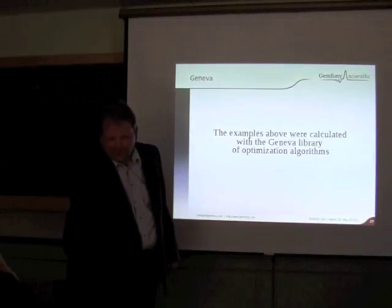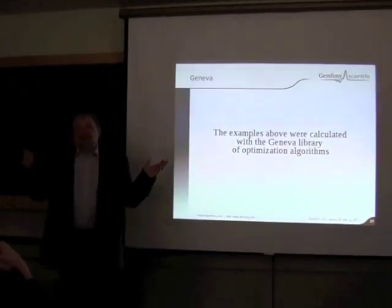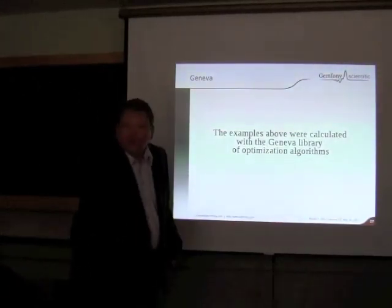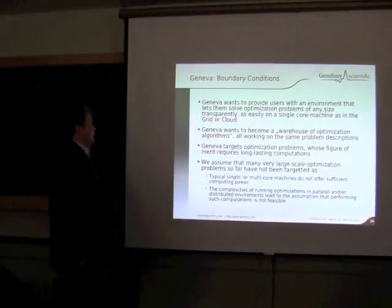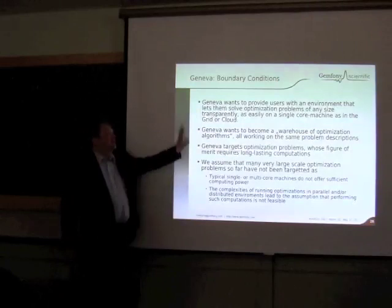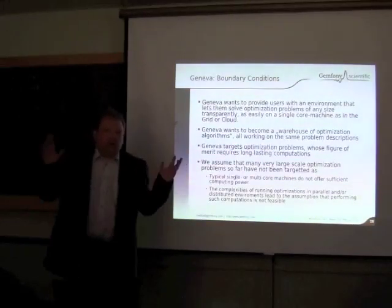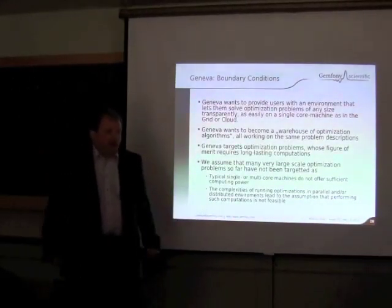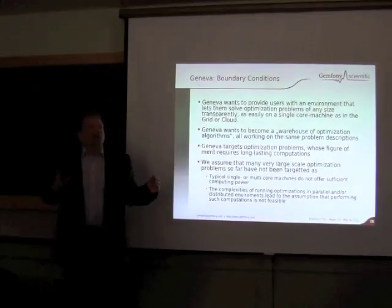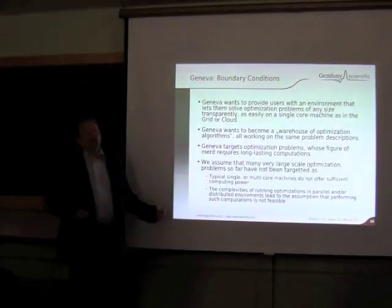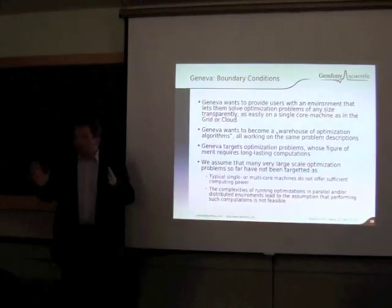These examples were calculated with the Geneva Library — though that's not the usual use case for it, because the evaluation of each candidate solution doesn't take long; it's a good way to visualize what happens. So, let's talk about the Geneva Library itself. It wants to provide users with an environment that lets them solve optimization problems of any size transparently, independent of what sort of device they use. We want to provide the capability of performing parallel optimization procedures on devices ranging from single-core machines over many-core machines, over clusters, all the way to grids and clouds, where fault tolerance matters.